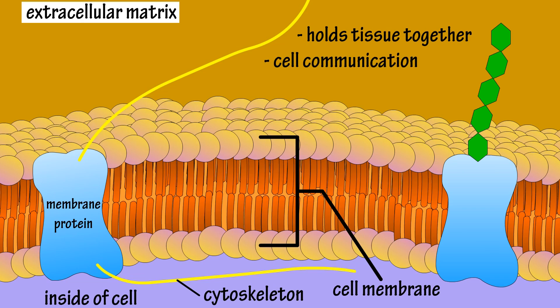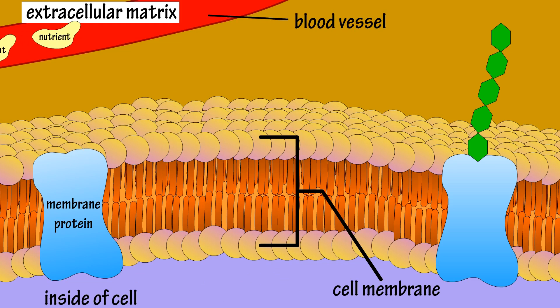These connections also allow the cells to communicate with one another. Another important function is that the interstitial fluid allows for the delivery of nutrients to the cells, as it receives nutrients from blood vessels and delivers them to tissue cells, so the cells can continue to thrive and do their jobs.